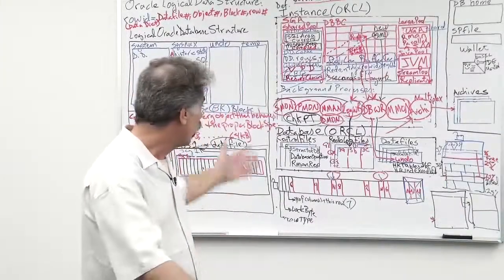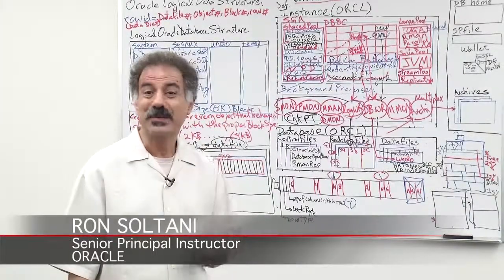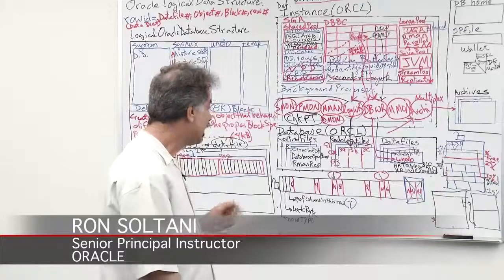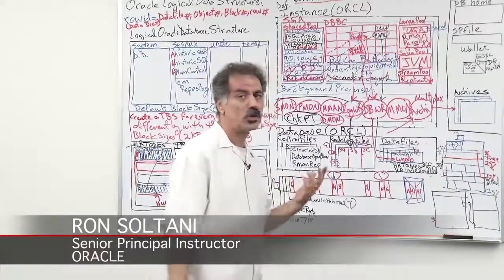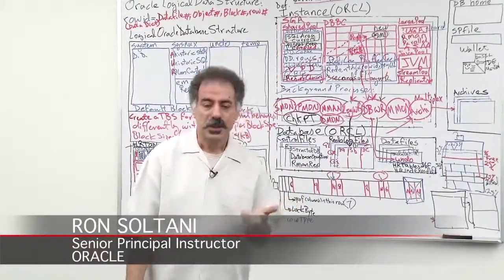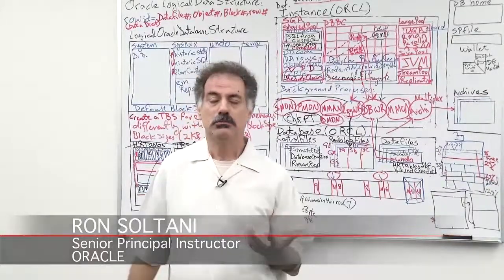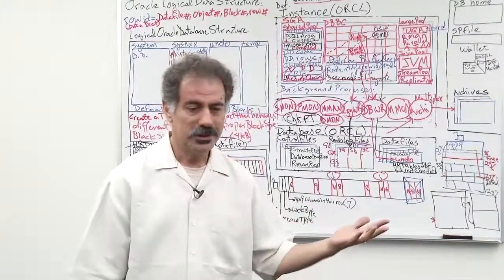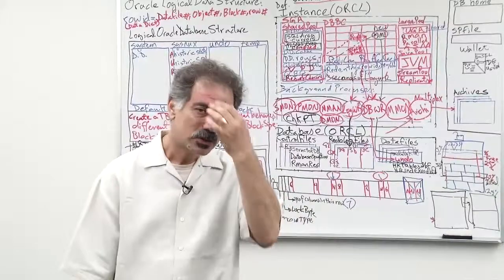Now that we understand the logical structure and we talked about fragmentation management, the next segment we're going to talk about is block corruption management. Because in the database, it's data that is written on the disk, therefore there are possibilities for corruption.